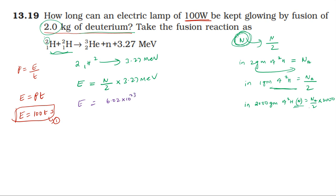The total energy is calculated as: (1/2) × (2000/2) × Avogadro's number × 3.27 million electron volt, converting using 1 MeV equals 1.6 into 10 power minus 13 joule. So energy equals 6.02×10²³ divided by 2, multiplied by 2000, multiplied by 3.27, multiplied by 1.6×10⁻¹³ joule.